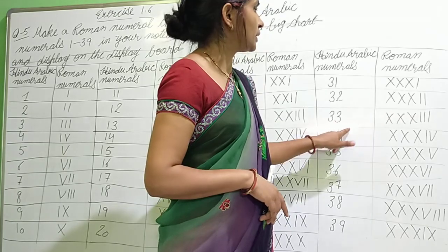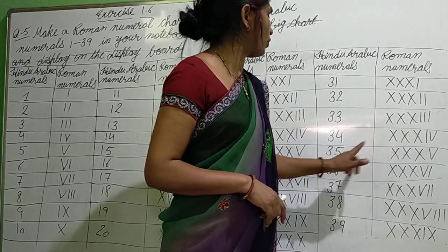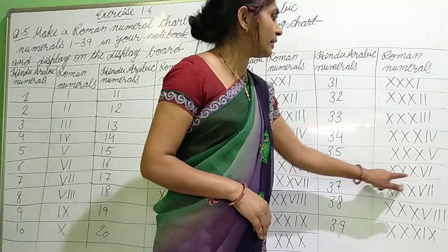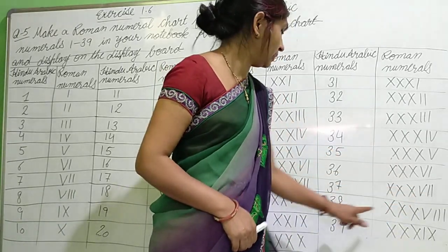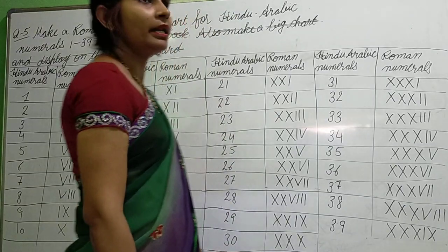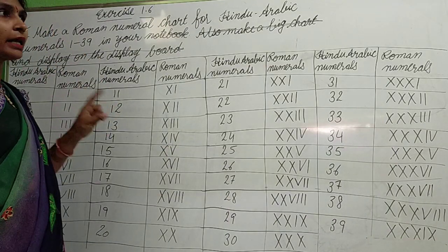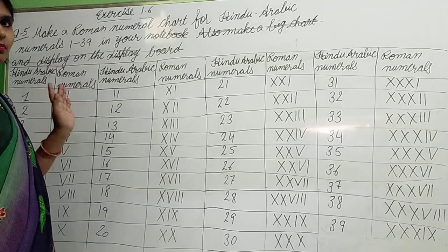34 is 30 plus 4. 35 is 30 plus 5. 36 is 30 plus 6. 37 is 30 plus 7. 38 is 30 plus 8. And 39 is 30 plus 9. These are the counting 1 to 39 in Hindu Arabic and the Roman numerals also. Okay, now our chapter 1st is completed. Exercise 1.6 is completed.